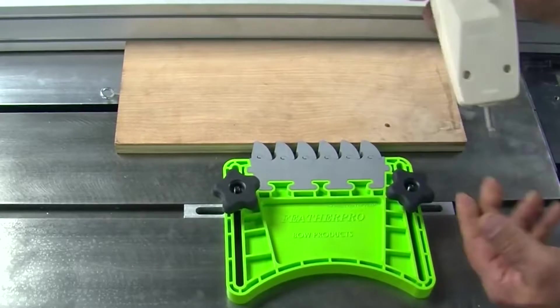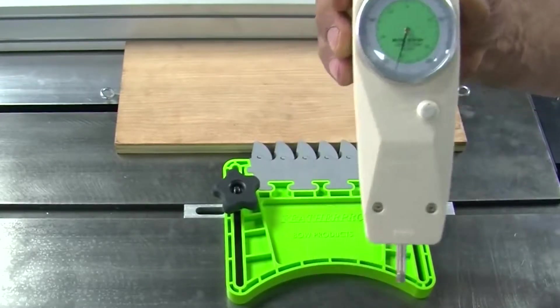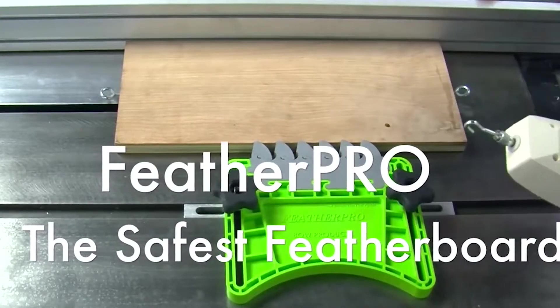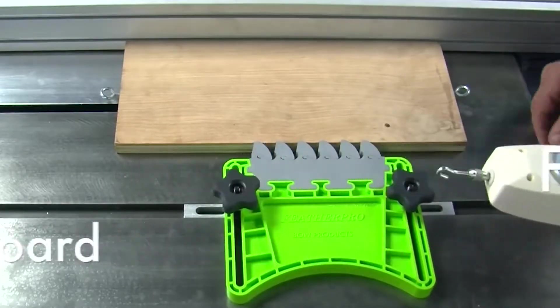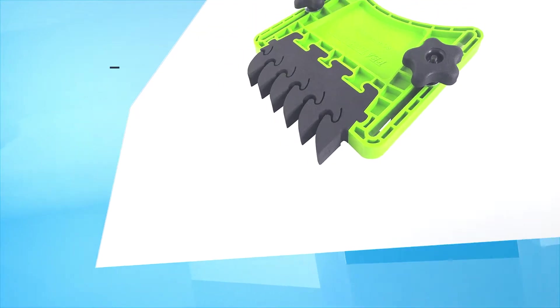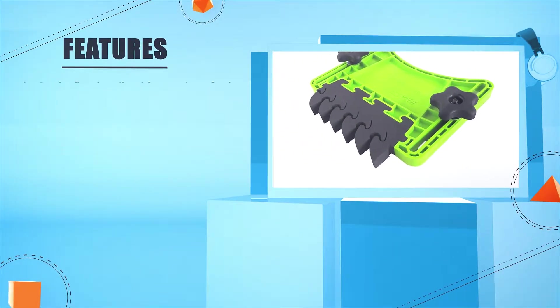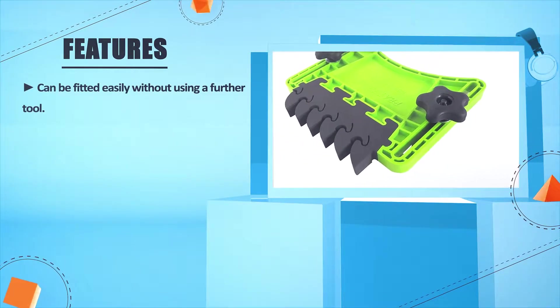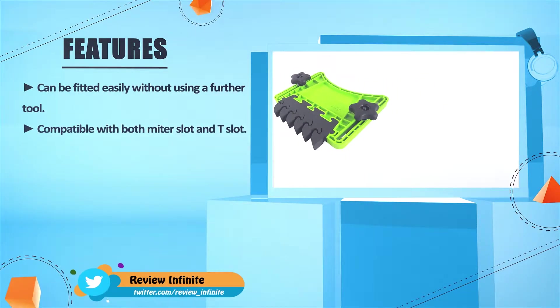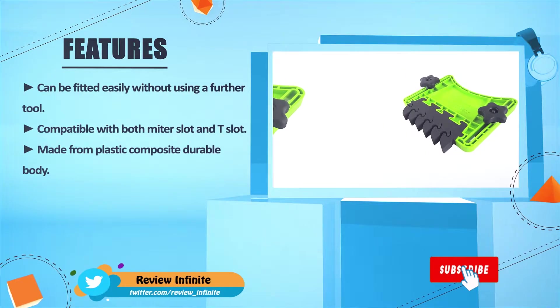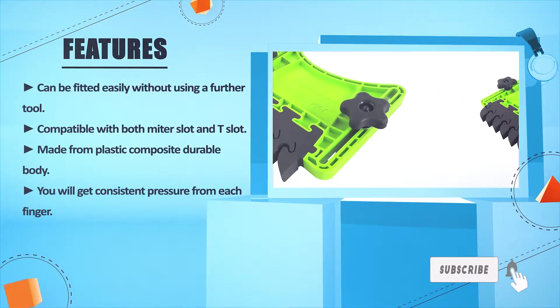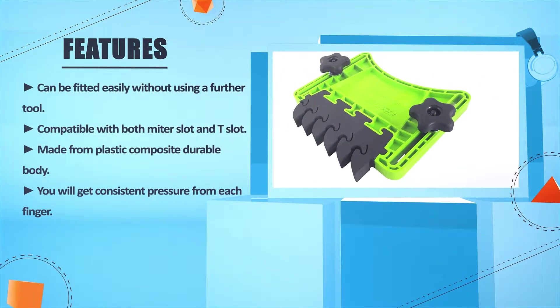This is what it's all about. 62 pounds of force it took to overcome that. That's the safety feature right there. Can be fitted easily without using a further tool. Compatible with both miter slot and T-slot. Made from plastic composite durable body. You will get consistent pressure from each finger.